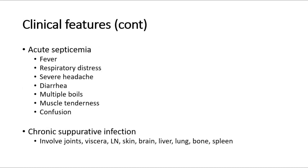The third group is those who are more severe with acute septicemia, commonly seen in patients with debilitating illness or comorbidities. They often present with fever with no evidence of a focus of infection. The onset may be sudden and rapidly progress to disseminated bacteremia involving multi-organ and causing septicemic shock, with symptoms such as respiratory distress, severe headache, fever, diarrhea, multiple boils, muscle tenderness, and even confusion.